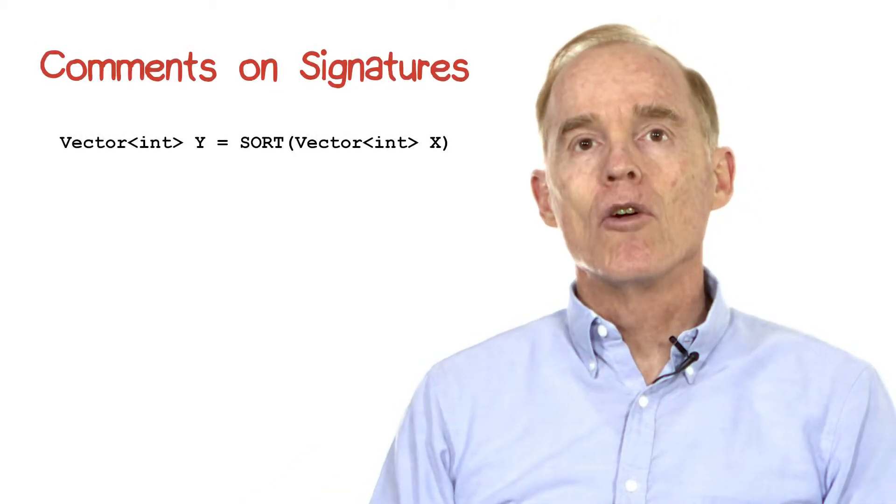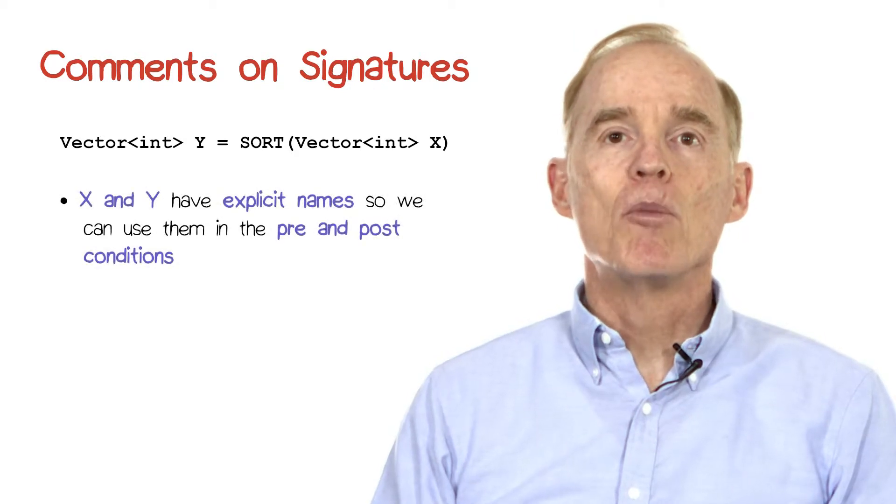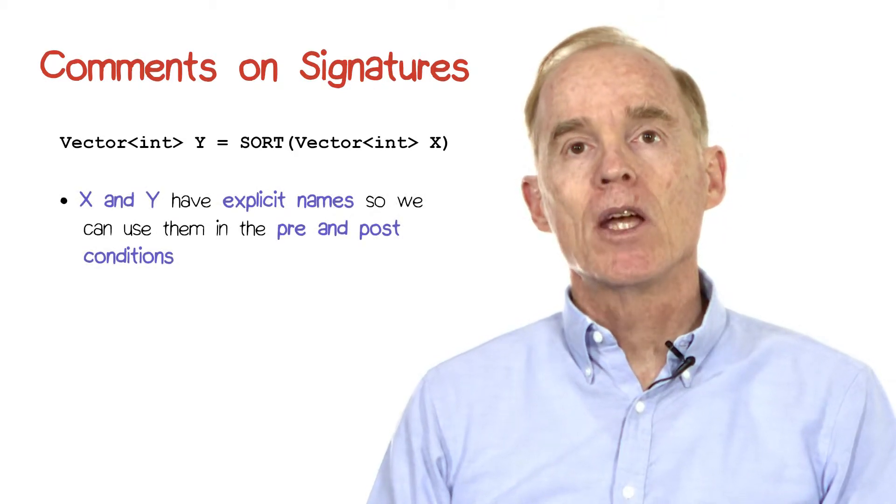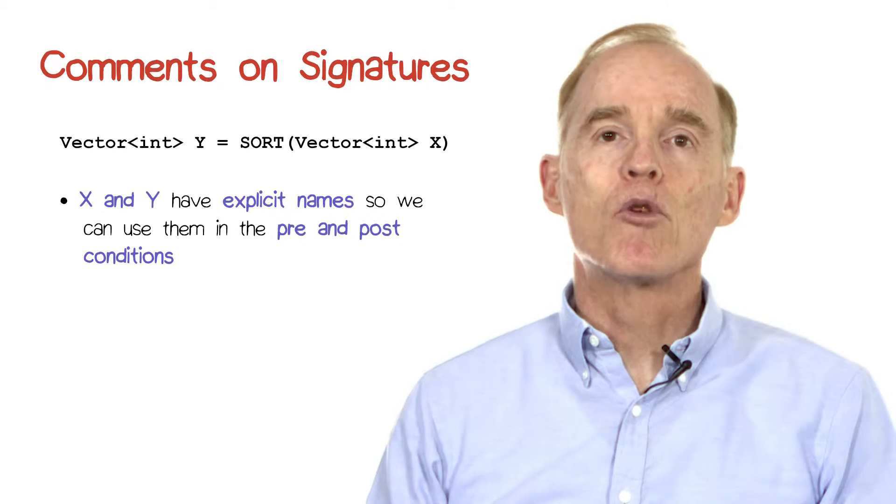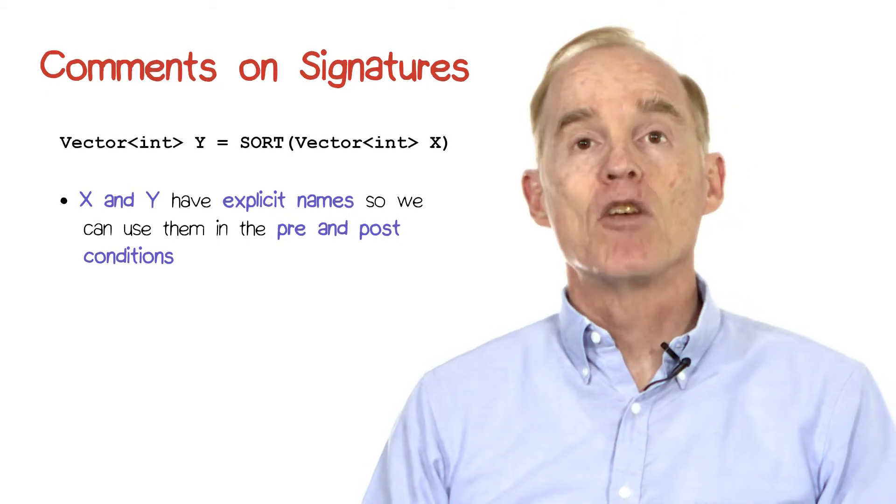In specifying the signature, we have given explicit names to the variables y and x. We do this because we'd like to be able to refer to them in the pre and post conditions by some name.